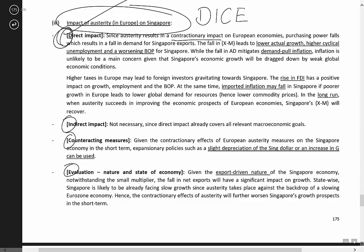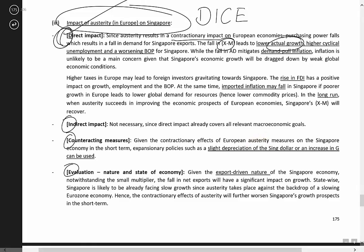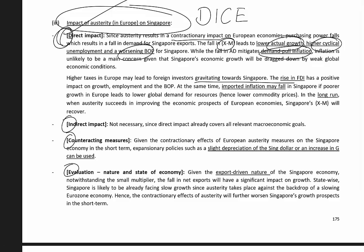Austerity results in a contractionary impact on European countries. With lower income, they will buy less goods from Singapore. Based on Singapore's pattern of trade, we export high-quality products regarded as normal goods. So with a fall in X minus M, Singapore will experience lower growth, higher unemployment, and a worsening balance of payments. Demand-pull inflation may fall, but this is unlikely to be a major concern because Singapore is so reliant on the rest of the world for growth — if Europe is in trouble, Singapore is unlikely to be experiencing full employment. On the brighter side, higher taxes in Europe may lead investors to gravitate towards Singapore, so we see a rise in foreign direct investment.